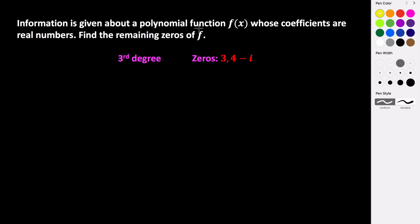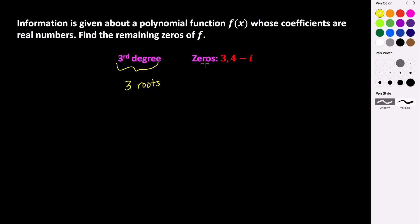Information is given about a polynomial function f whose coefficients are real numbers, and we are tasked to find the remaining zeros of this function. This function is a third-degree polynomial, and given that it's a third-degree polynomial, we know that it should have three roots or three zeros.